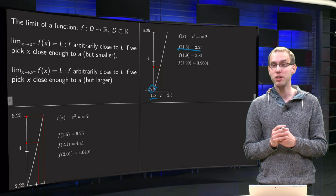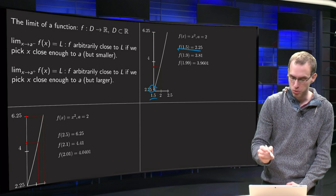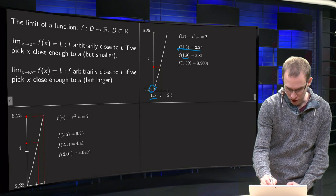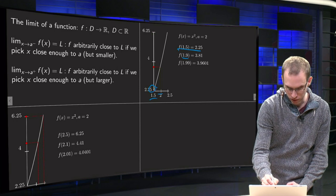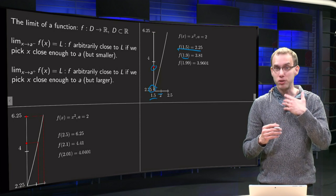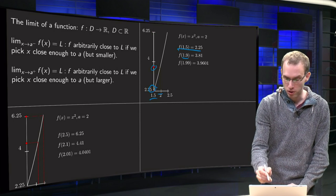And then we continue. If we get closer to x equals 2, like we take 1.9, we get 3.81. So x equals 1.9 over here, function value 3.81 over there. And then we continue, we take values even closer to 2, but not equal to 2 and smaller, like 1.99.